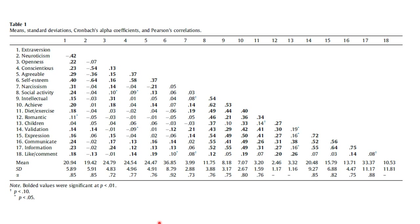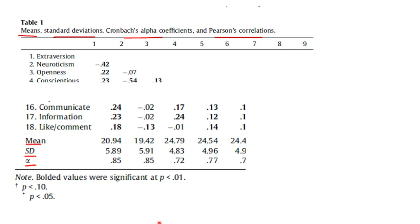Now let's look at what correlations look like in research articles. This is the data table of correlations from the Marshall et al. article discussed earlier. It shows means, standard deviations, Cronbach's alphas, and Pearson correlations.